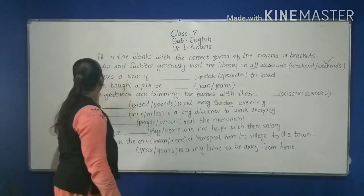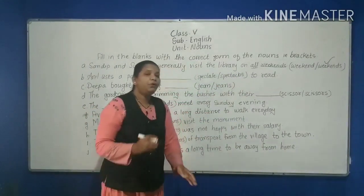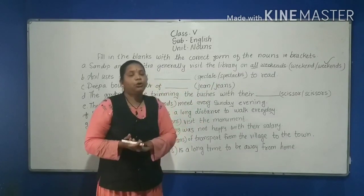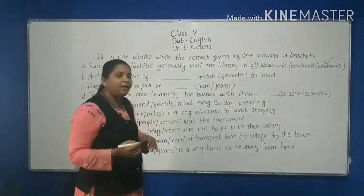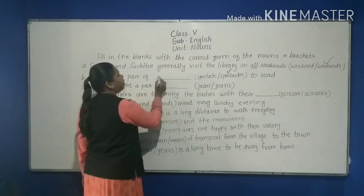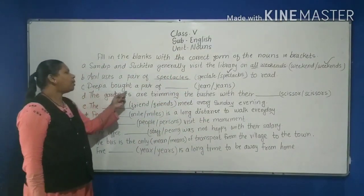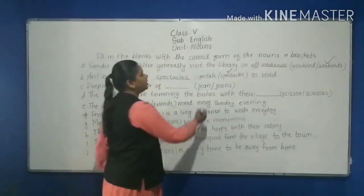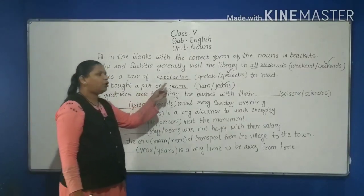Next: 'Anil uses a pair of ___ to read.' We choose 'spectacles' because spectacles come in a pair and remain the same in singular and plural — we cannot say 'spectacle'. Third: 'Deepa bought a pair of ___.' Since it is a pair, we write 'jeans'.